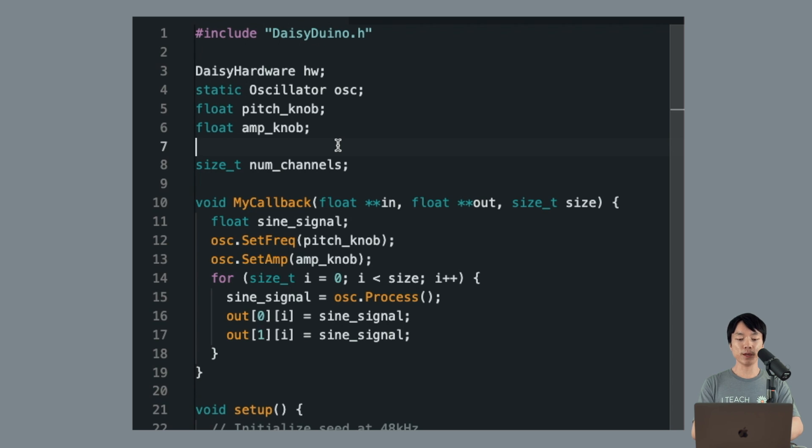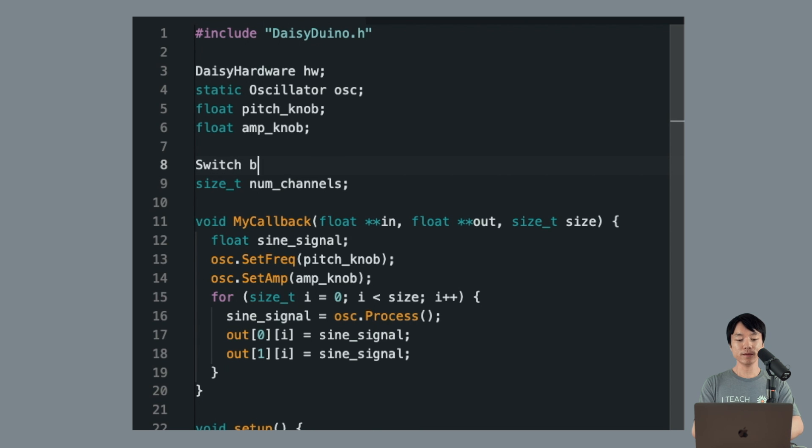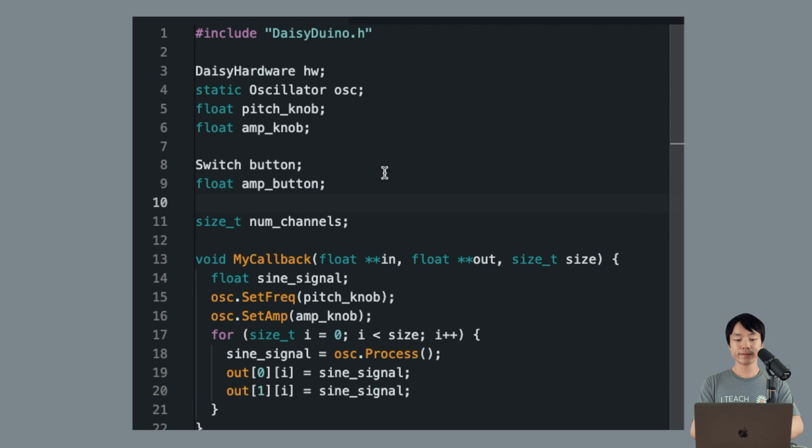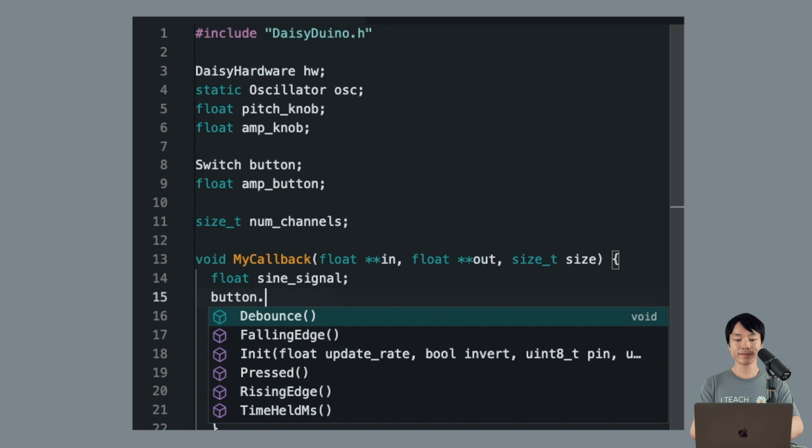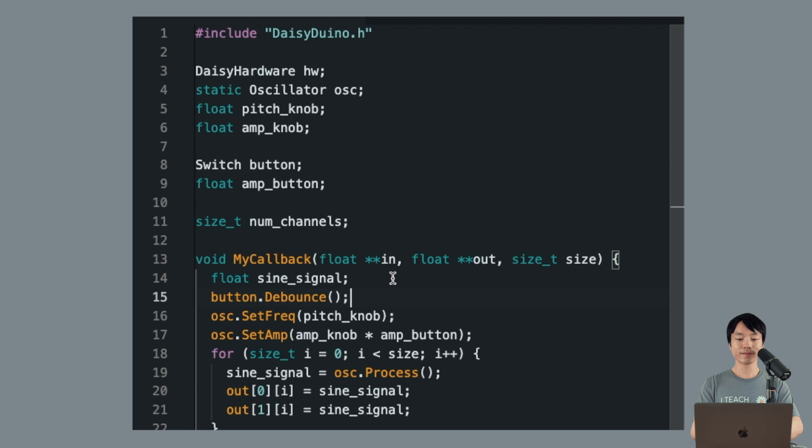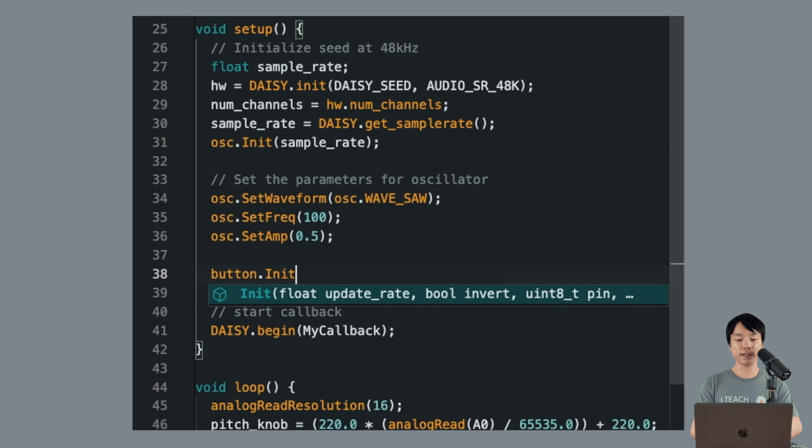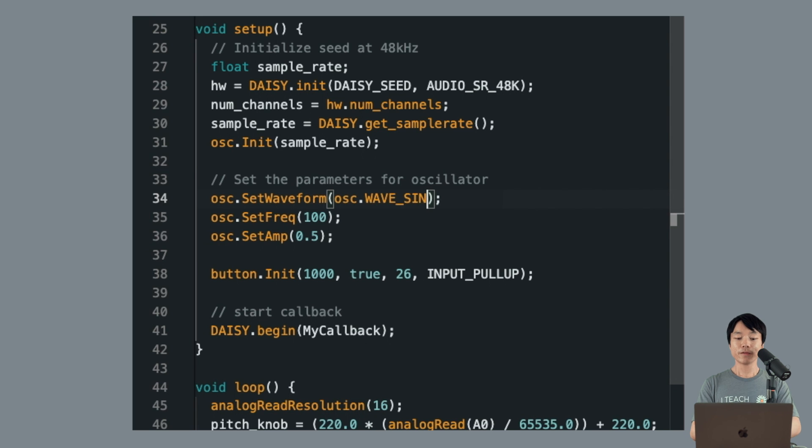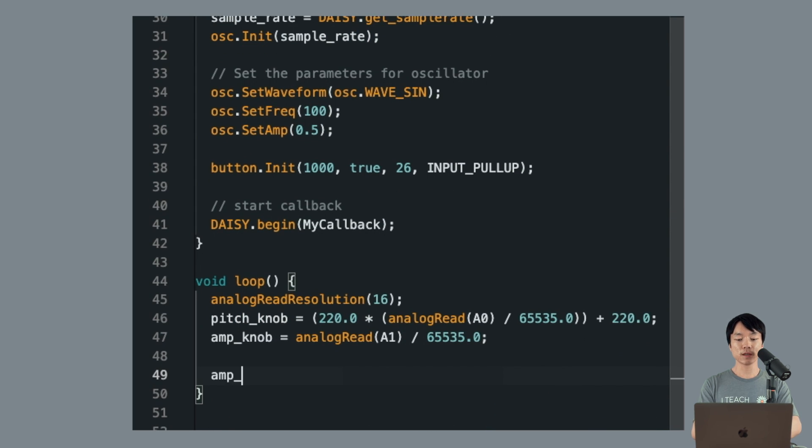So we'll open up the code from our previous tutorial, and first add SWITCH BUTTON and FLOAT AMP BUTTON. Then we'll change the OSC setAmp ampNob in my callback to OSC setAmp ampNob times ampButton. We'll also add the debounce function here. Then in setup, we add that line for initializing the button. And we'll use sine wave for this demo. Finally, in void loop, we'll add the line ampButton equals button pressed.